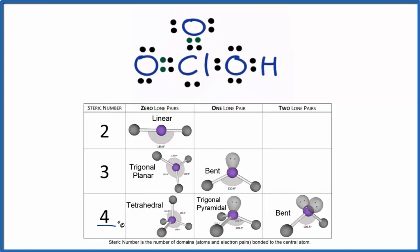With my steric number of four, next I want to look at the number of lone pairs. I can see there's only one pair of lone pairs on that central chlorine. If there's just one pair and I have a steric number of four, this is going to be trigonal pyramidal. That's going to be its molecular geometry.